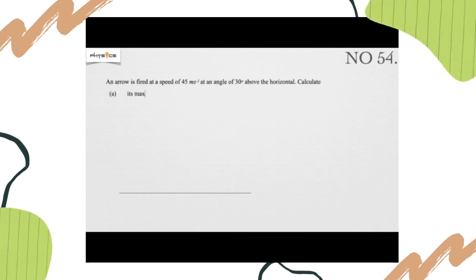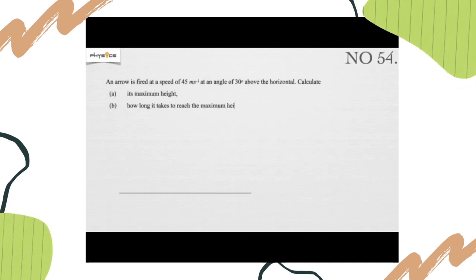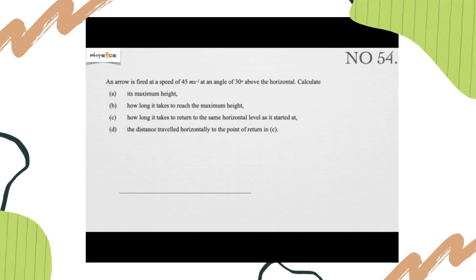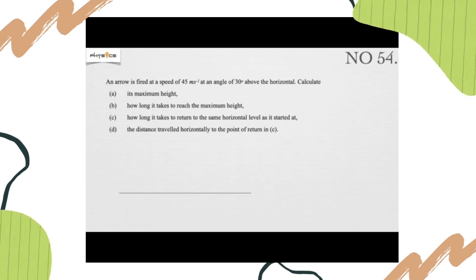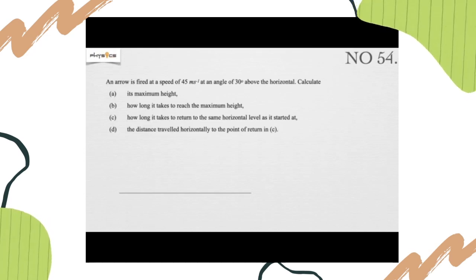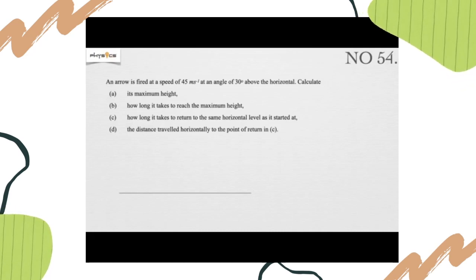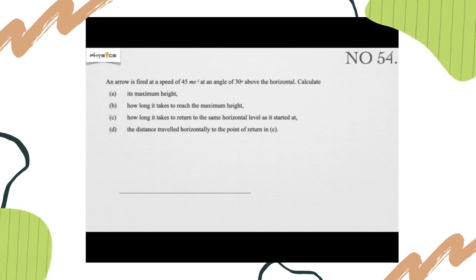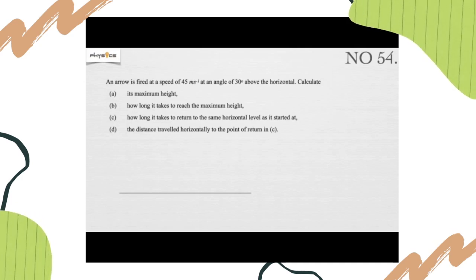Let's move to the last question, number 54 from your VEX question. An arrow is fired at a speed of 45 meters per second at an angle of 30 degrees above the horizontal. Calculate: A, its maximum height; B, how long it takes to reach the maximum height; C, how long it takes to return to the same horizontal level as it started at; and D, the distance traveled horizontally to the point of return in C.